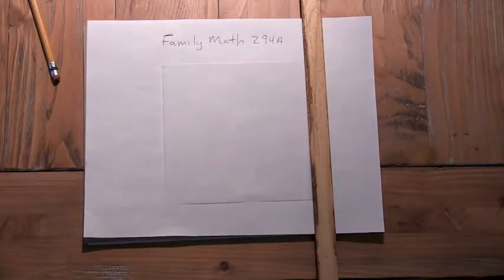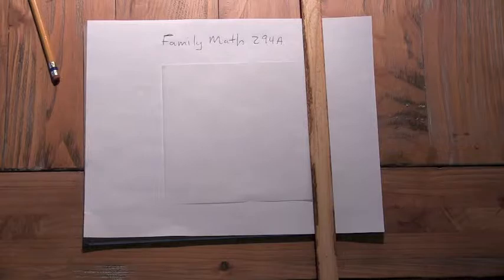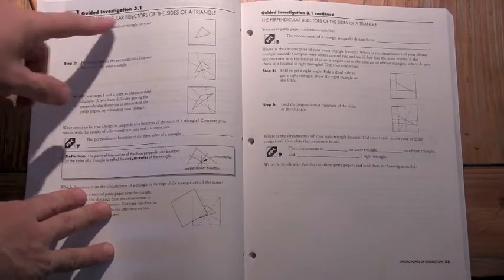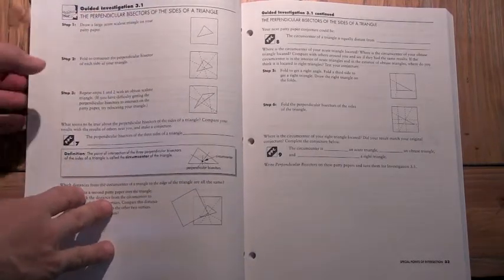So I just ordered it and decided it'd be fun to give it a try and it just came today. So I thought just to check it out, we would do one of the exercises. Literally, just flipping through the book, I saw this one that looks actually kind of interesting, exercise 3.1, investigating the perpendicular bisectors of a triangle.